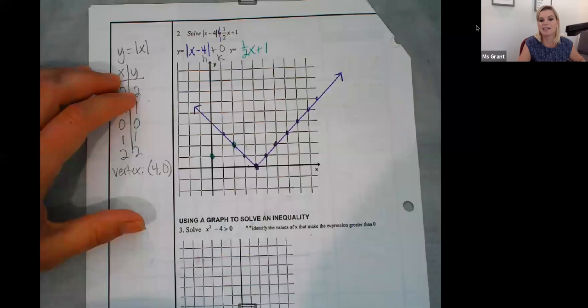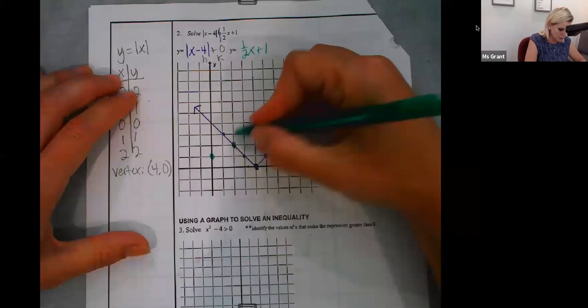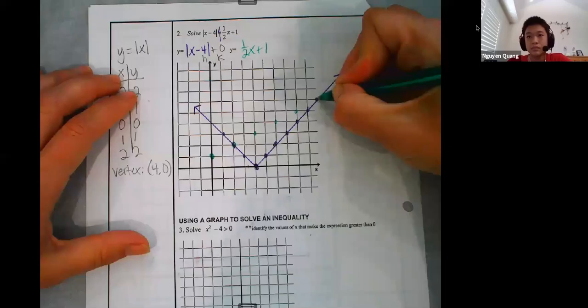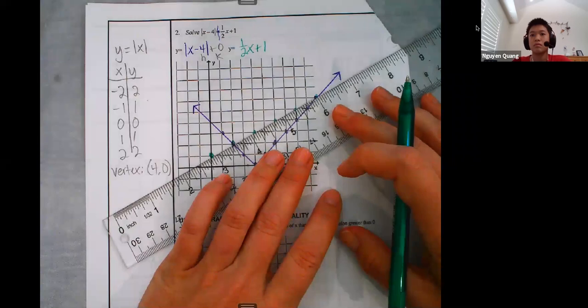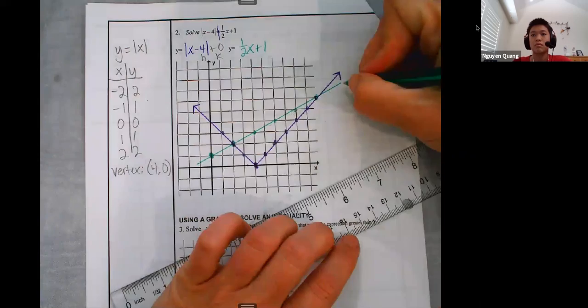I'm going to continue on because I know it hits the other side of my absolute value function. Rise 1, run 2. Up 1, over 2. Up 1, over 2. Up 1, over 2.